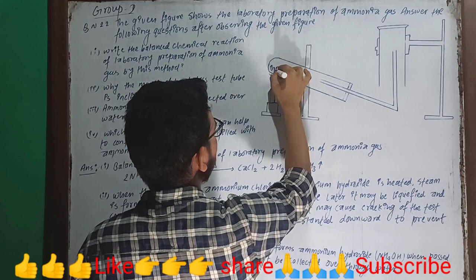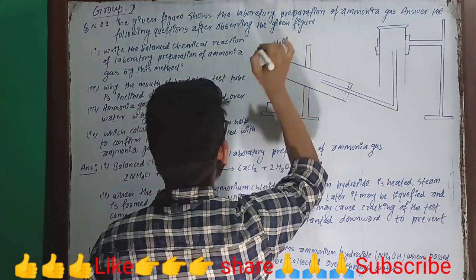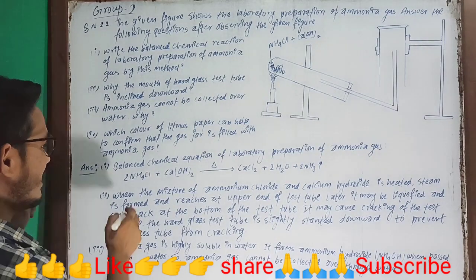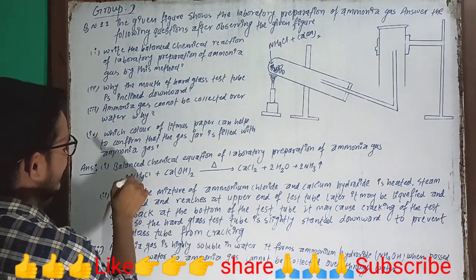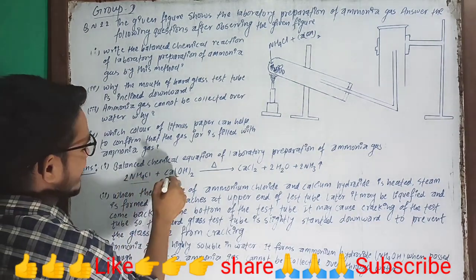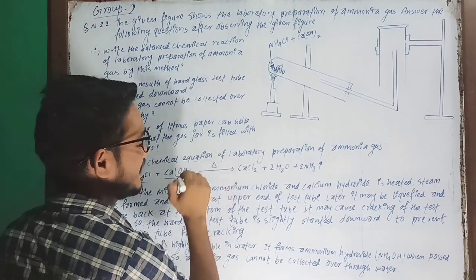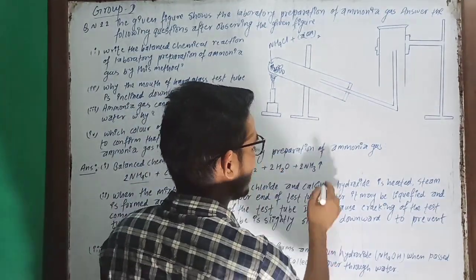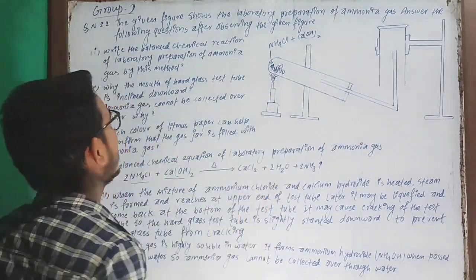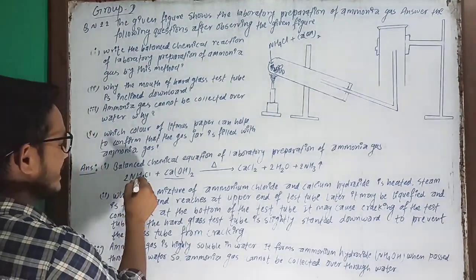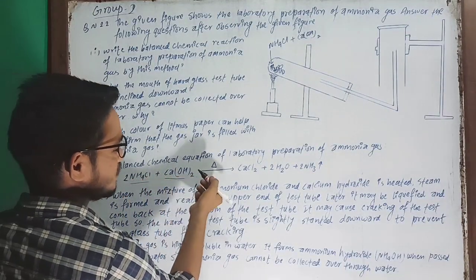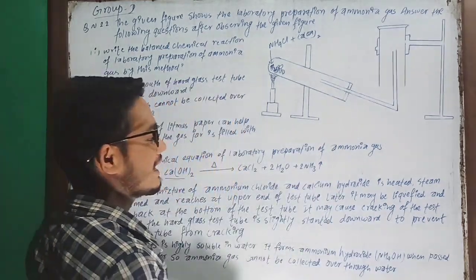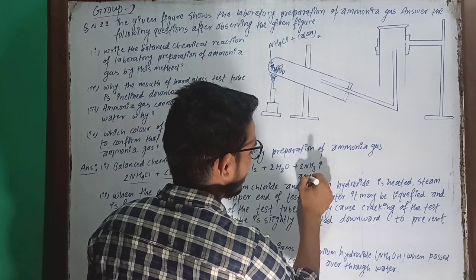Calcium hydroxide and ammonium chloride will be combined. The balanced chemical equation: NH4Cl plus Ca(OH)2 with heat symbol gives CaCl2 plus H2O plus 2 molecules of NH3. This is the balanced chemical equation of laboratory preparation of ammonia gas.